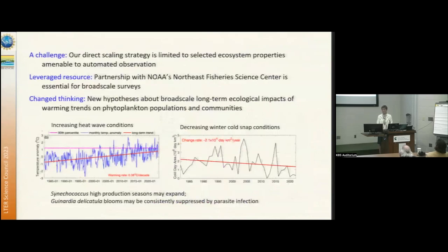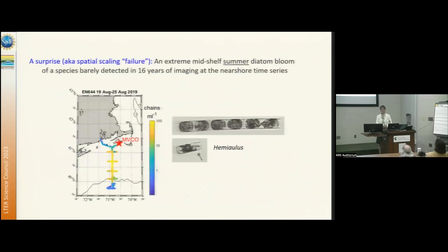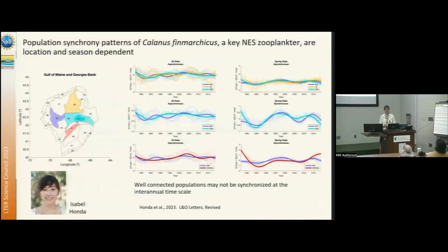Our direct scaling approach has a challenge in that it only works for the types of observations we can make in this automated, high-resolution way. We're really benefiting from leveraging our NOAA partners for broad-scale sampling. We're generating new hypotheses about how increased prevalence of heat waves and decreased prevalence of cold snaps may be impacting population and community dynamics in our system. It doesn't always work — what the template called a 'spatial scaling failure' is actually a really interesting surprise. Sometimes what we see offshore is totally different from anything we've seen nearshore, and those are some of the more interesting things we're looking at going forward. I invite you to talk to my colleague here at this meeting about how we're looking at spatial scaling in important consumers in NES.